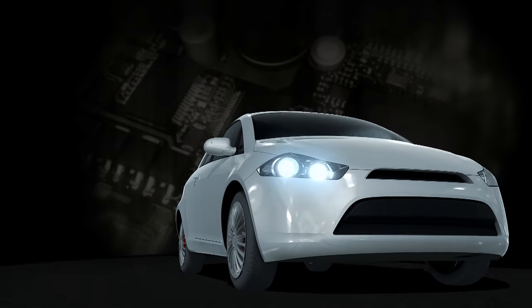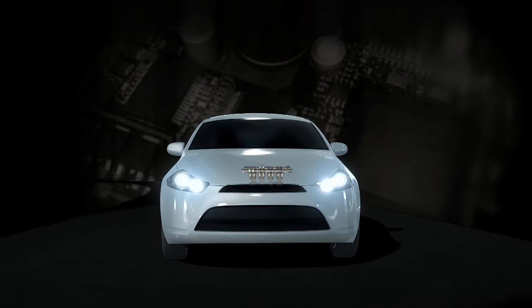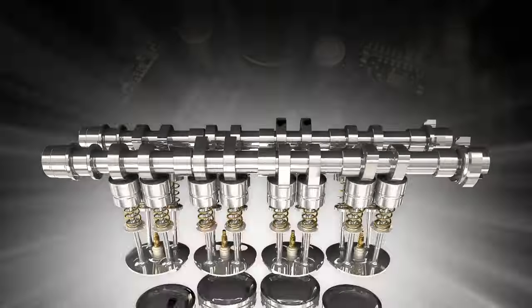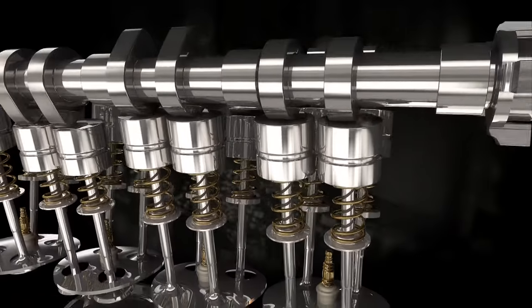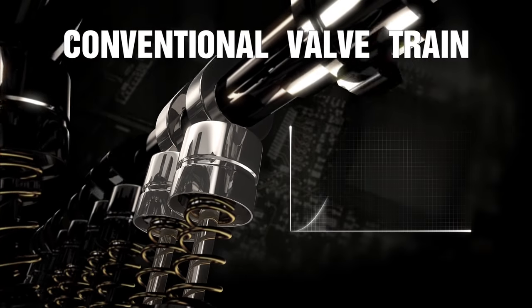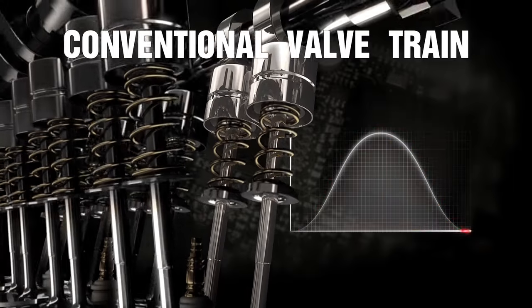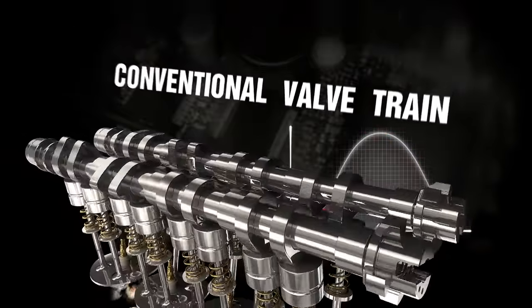In conventional internal combustion engines, cylinder air charge through the intake valve is controlled by the rotation of a camshaft through a simple throttle. The main disadvantages of this system are a waste of energy and a slow adjustment to the continuously changing driving conditions.